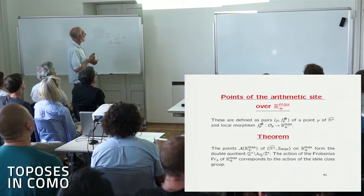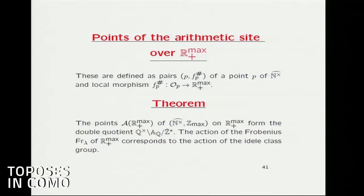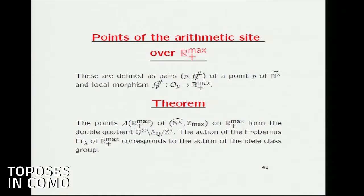The theorem is that if we take the points of the arithmetic side over R_{max}^+, our theorem has two parts. First, the points over R_{max}^+ of this topos of the arithmetic side form exactly the same double quotient we had before — the space X_Q. Moreover, the action of the Frobenius on R_{max}^+ corresponds exactly to the action of scaling on the previous points. So we are in a kind of ideal situation where we have an analog of the Frobenius.